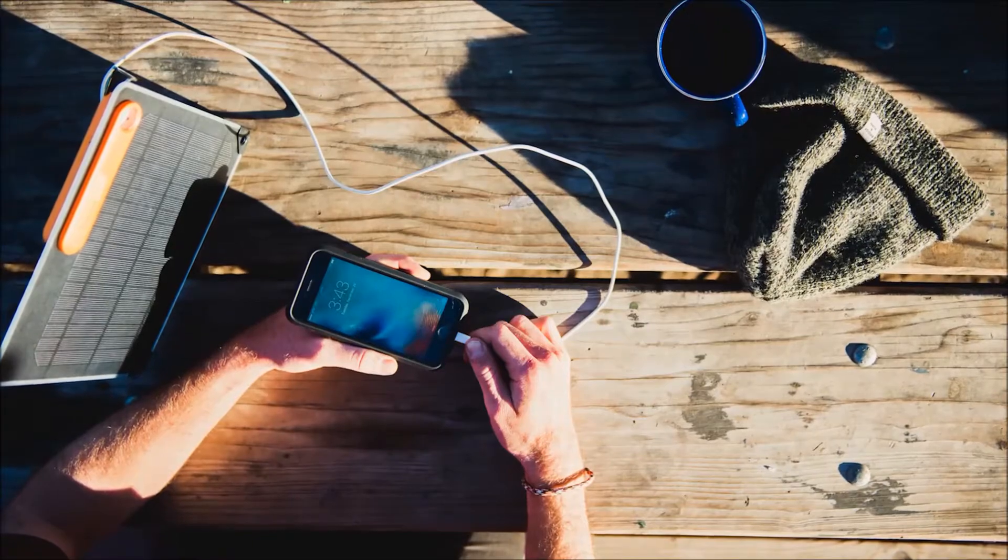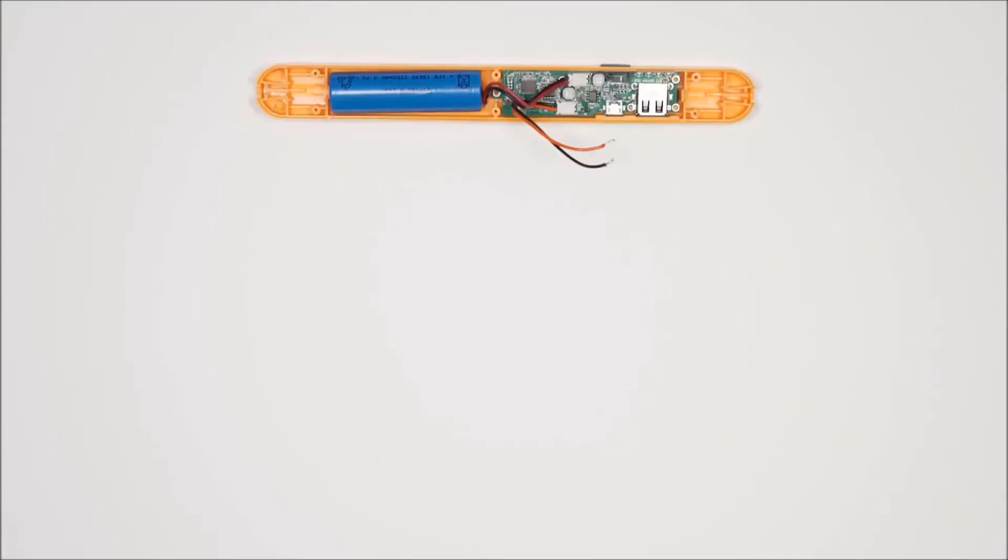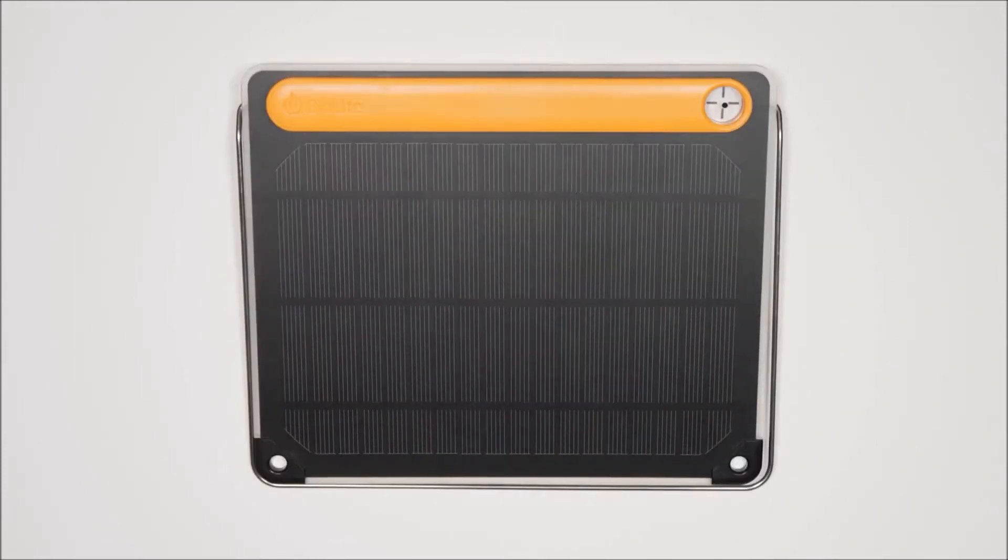The result is faster charging times and no crashes to your panel or devices. Simple setups, minimalist materials, and maximizing your power potential. That's how you get the most from the sun. From all of us here at BioLite, thanks for watching.